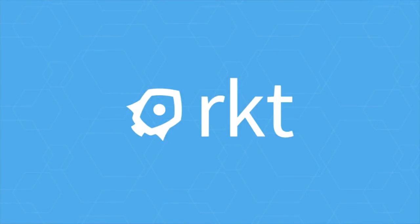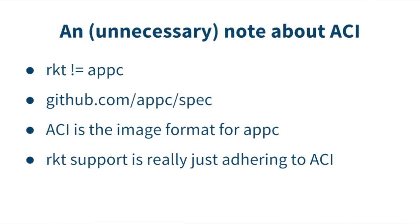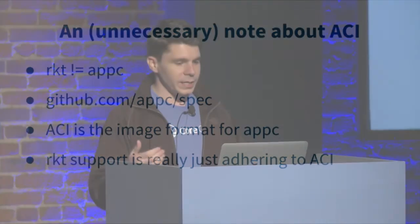It should come as no surprise that we are supporting Rocket and App Container spec where possible. App C is the app container spec, and specifically ACI is the image format for the app container spec. When we want to create a Rocket-compatible image, all we're doing is adhering to the ACI spec and streaming that information out that way.